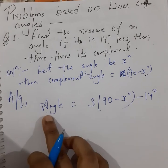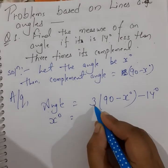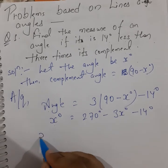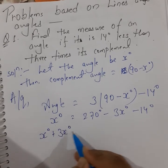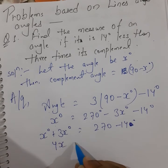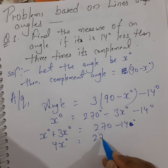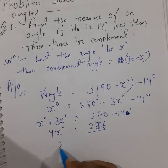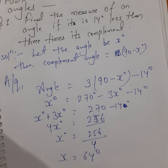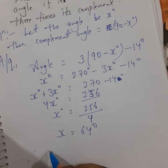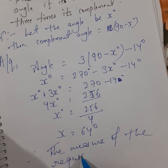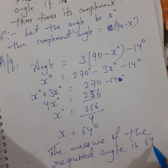The angle is 14 less than 3 times its complement, so x = 3(90 − x) − 14, which gives x = 270 − 3x − 14. Arranging variables on one side: x + 3x = 270 − 14, so 4x = 256, and x = 256 ÷ 4 = 64 degrees. Therefore, the measure of the required angle is 64 degrees.